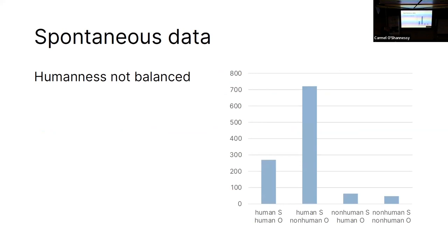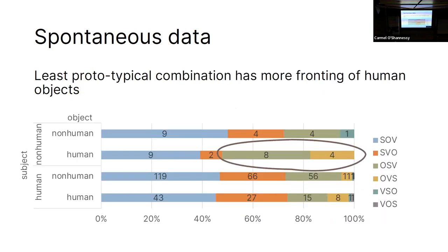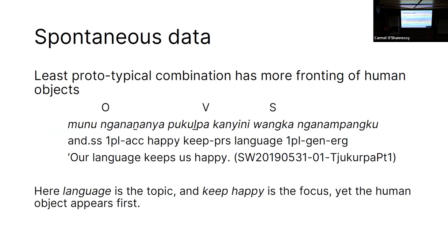Looking at the spontaneous data, the first main difference is that humanness is not balanced. The most typical sentence has a human subject and a non-human object, and there are far fewer non-human subjects. Looking at human versus non-human subjects and objects, in the least prototypical combination — a non-human subject acting on a human object — this shows quite a different pattern. Those human objects tend to get fronted, shown by the highlighted bars, which could be an effect of topicalizing human objects.